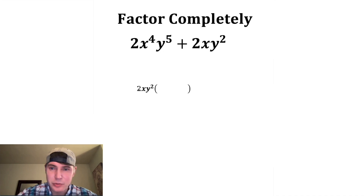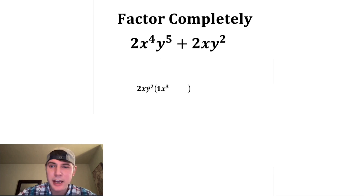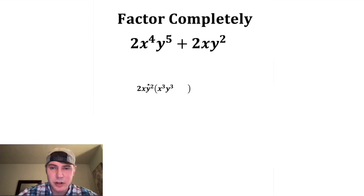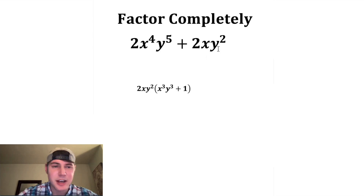So now let's go after this first one. Two times what gives us two? That's one. X times what gives us X to the fourth? That's X cubed. And then Y squared times what gives us Y to the fifth? That's Y cubed. So this times this gives us this. And now two X Y squared times what gives us two X Y squared? Well, that's just one, because this matches this exactly.